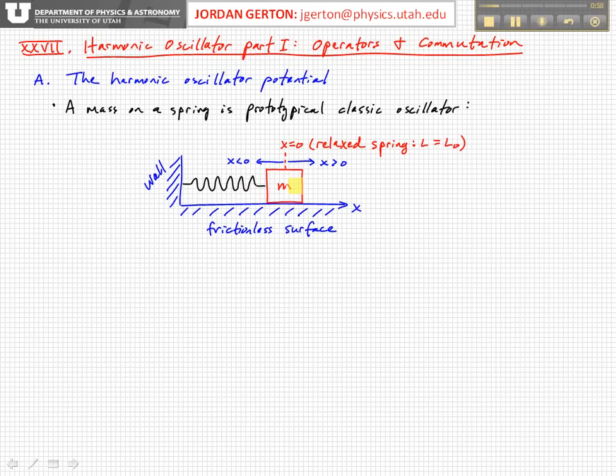We define the positive x-direction to be to the right, the negative x-direction to be to the left, and we also define the zero of x, x equals zero, to be the position where the spring is just relaxed, for example, if the mass were not vibrating, were not oscillating at all. The spring is attached to a wall on one side, and the mass is free to move on the other.